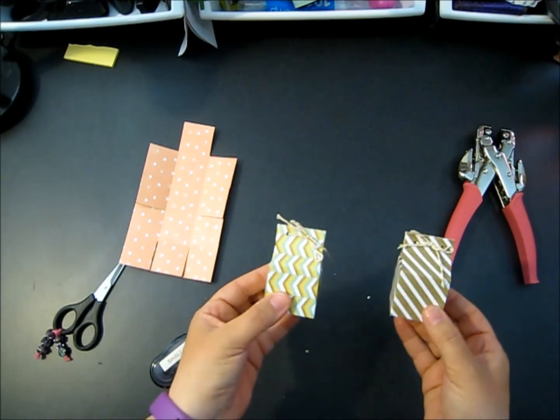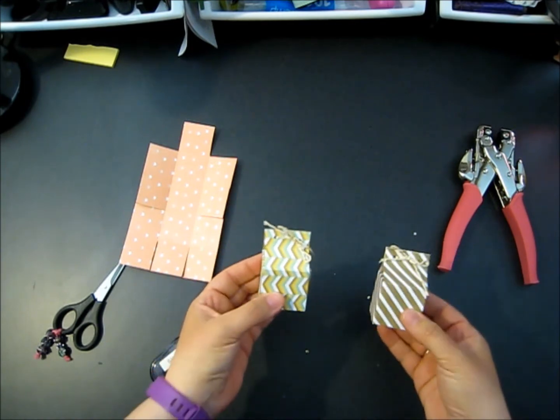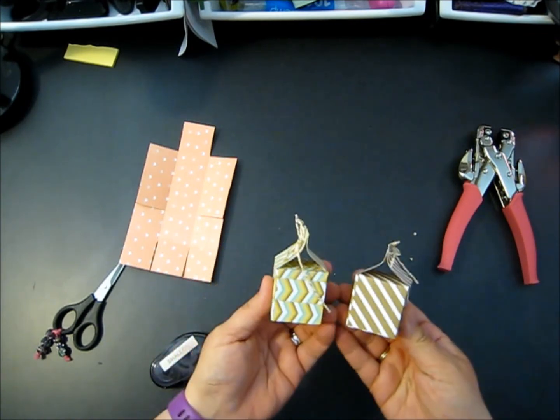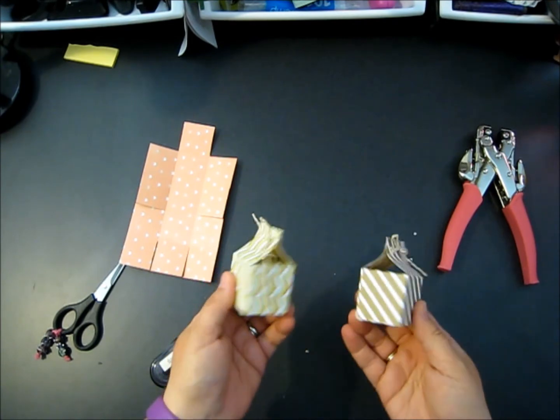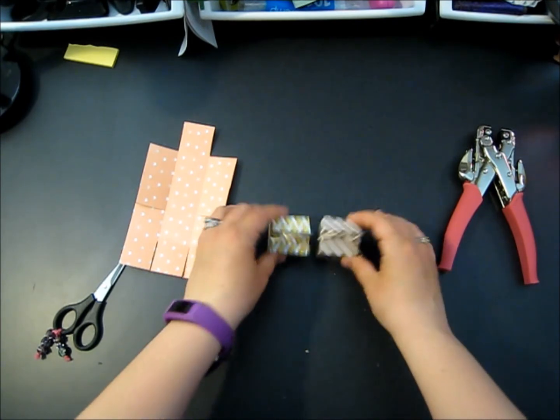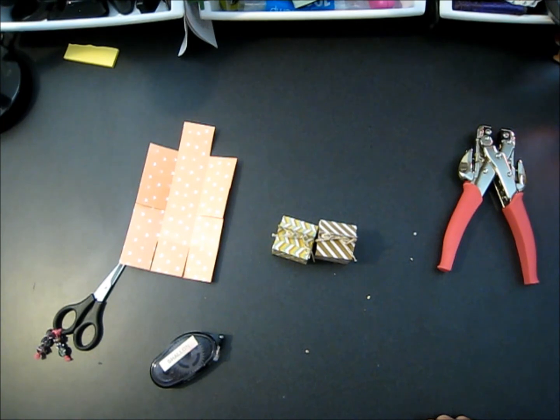So that is the third project that we did at stamp club. Mini square pinch top box from Pinterest, and I'll have all the links in the blog post. Very cool. Happy stamping, enjoy!